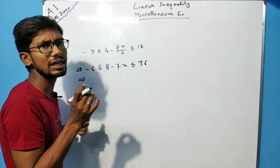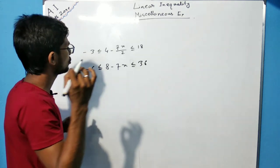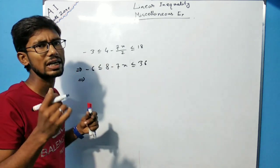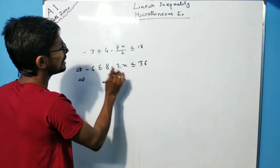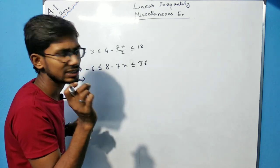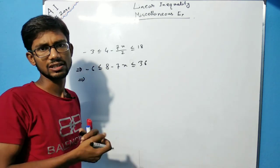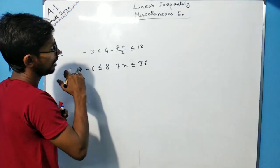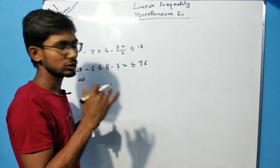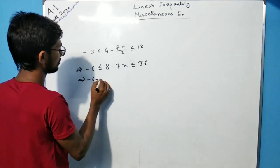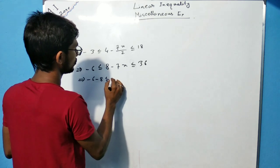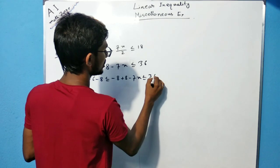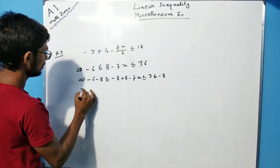We are trying to isolate x. So just subtract 8 throughout the whole inequality, then it will be minus 6 minus 8 is less than or equals to, minus 8; 8 plus 8 minus 7x less than or equals to 36 minus 8.